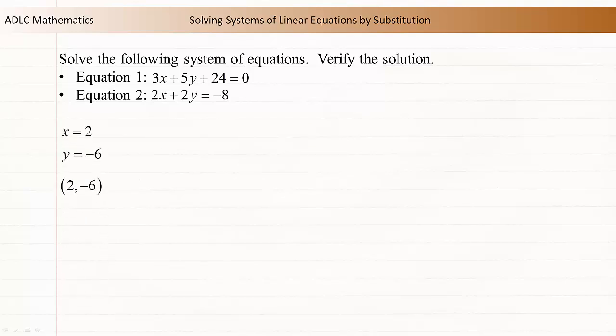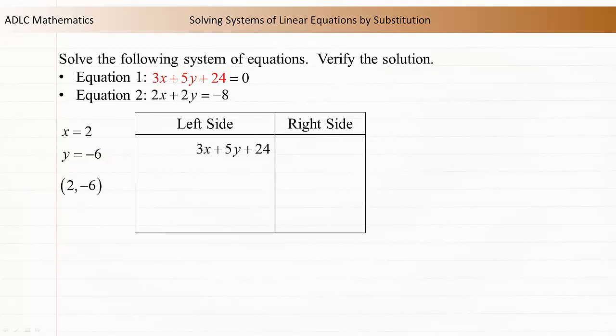We can substitute these values into the original equations to verify our solution. Let's start with the left side of equation 1. Substitute 2 for x and -6 for y. This evaluates to 0. The right side of equation 1 is 0. The left side equals the right side, so the solution works for equation 1.